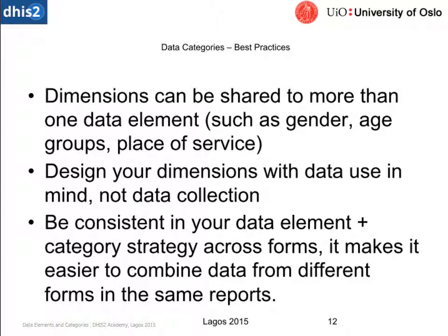A few best practices: it's always best to share the same sort of disaggregation for data elements. So if you're using gender, you want to make sure that if you're breaking it down to female, male, other, that it is always female, male, other. It'll save you a lot of time and allow you to have higher quality reports if you have the same disaggregation for multiple data elements. If you have different age groups or categories, it'll be difficult to define what youth is if each of your data elements has a different breakdown for youth, for example. And of course you want to design your dimensions with the use in mind, not the collection.